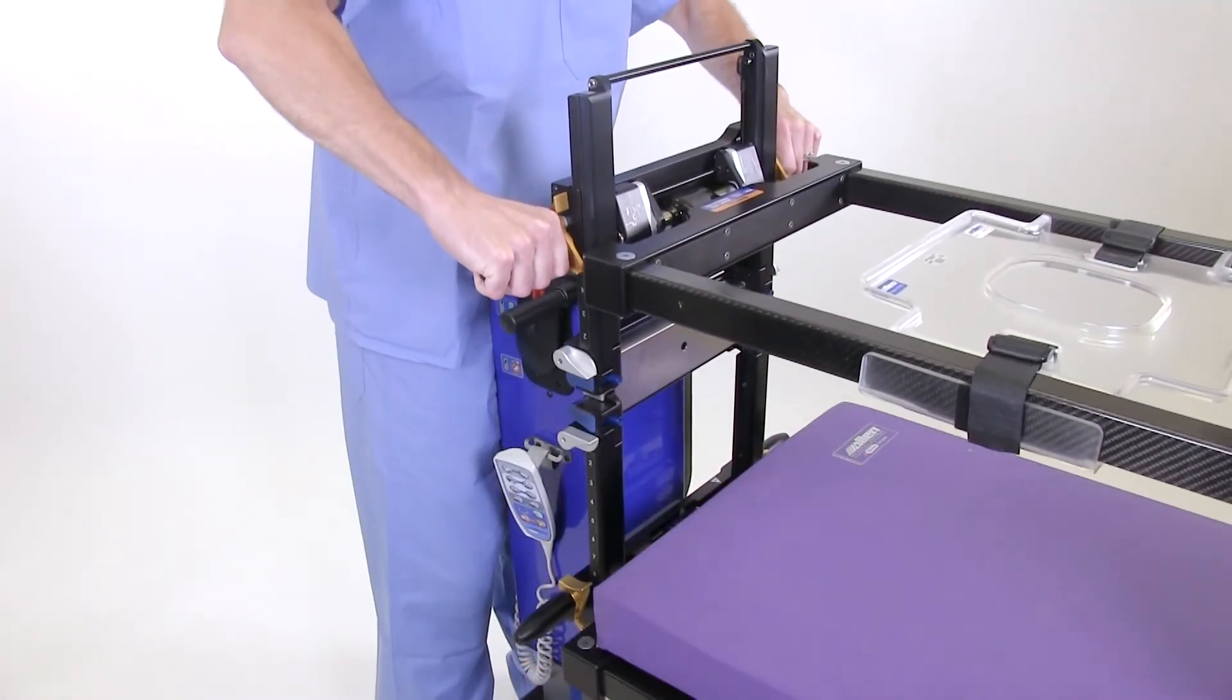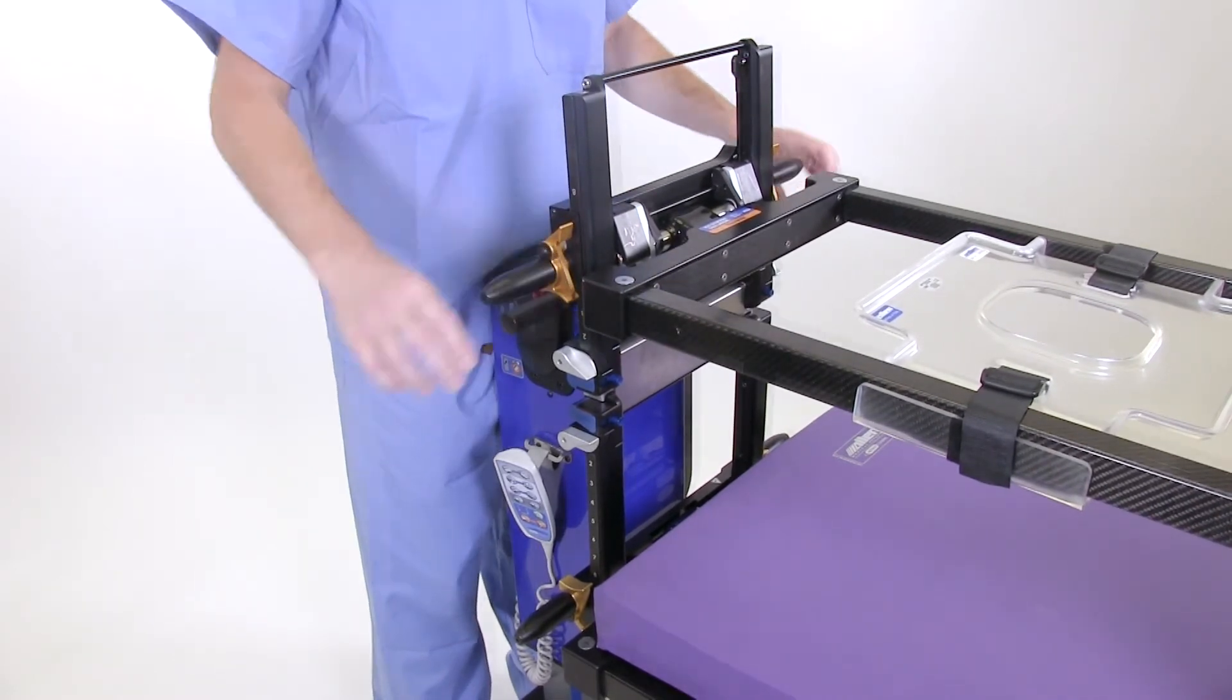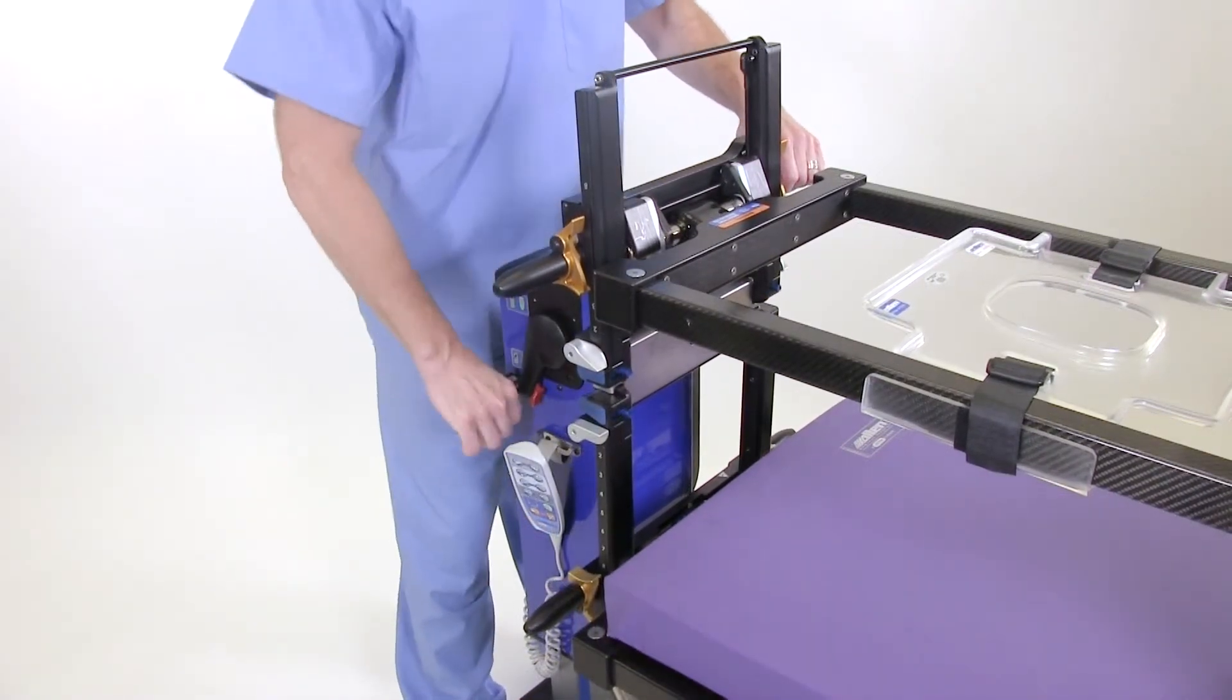Advance the two gold height adjustment latches forward and adjust the height appropriately. To lock in place, release the gold height adjustment latches. You are now ready to rotate the patient.